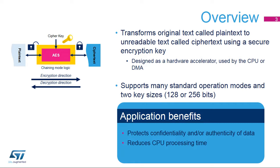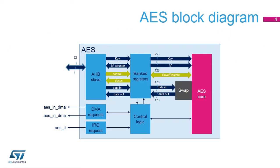The AES peripheral is more efficient than a software library in terms of processing time. It supports multiple chaining modes, protecting data confidentiality or data confidentiality with authenticity depending on the mode. Encrypting plaintext data into ciphertext and inversely decrypting ciphertext into plaintext requires intensive computing, which represents a huge workload when done entirely by software.